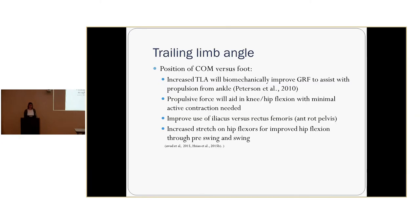The position of center of mass versus the foot defines the trailing limb angle. Studies show increased trailing limb angle will biomechanically improve the ground reaction force to assist with propulsion from the ankle. The overall propulsive force will aid in hip and knee flexion with minimal active contraction needed. It improves the use of the iliacus versus rectus femoris by keeping your pelvis anteriorly rotated, and provides increased stretch on hip flexors for improved hip flexion through pre-swing and swing.